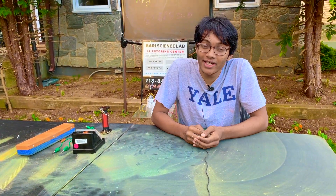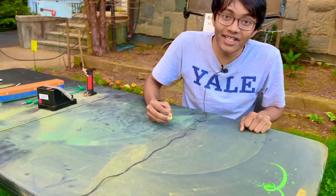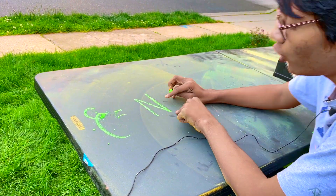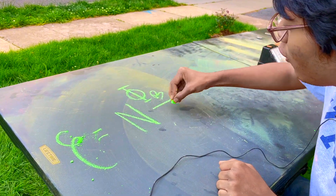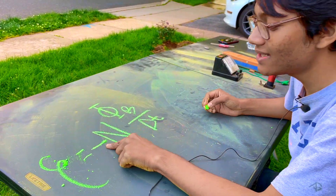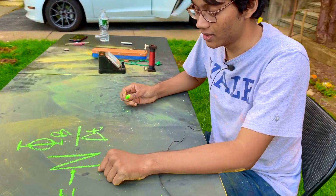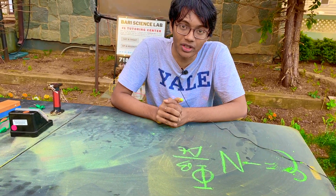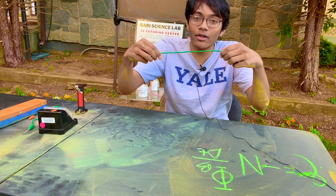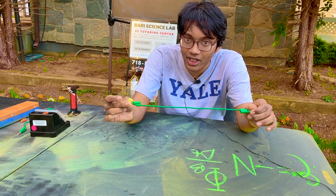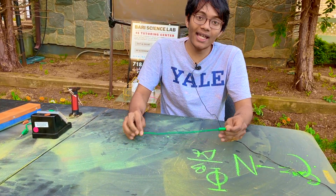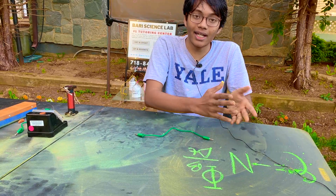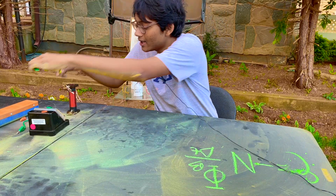Today we're discussing Faraday's Law, which states that the electromotive force — the induced voltage created by a moving magnet — is going to be N, the number of turns of coil, times the change in magnetic flux over the change in time, with a minus sign to indicate the direction of the magnetic field. Faraday posed this question: if an electric field can create a magnetic field via a current-carrying wire, can a magnetic field create an electric field — can I create a current without a battery?